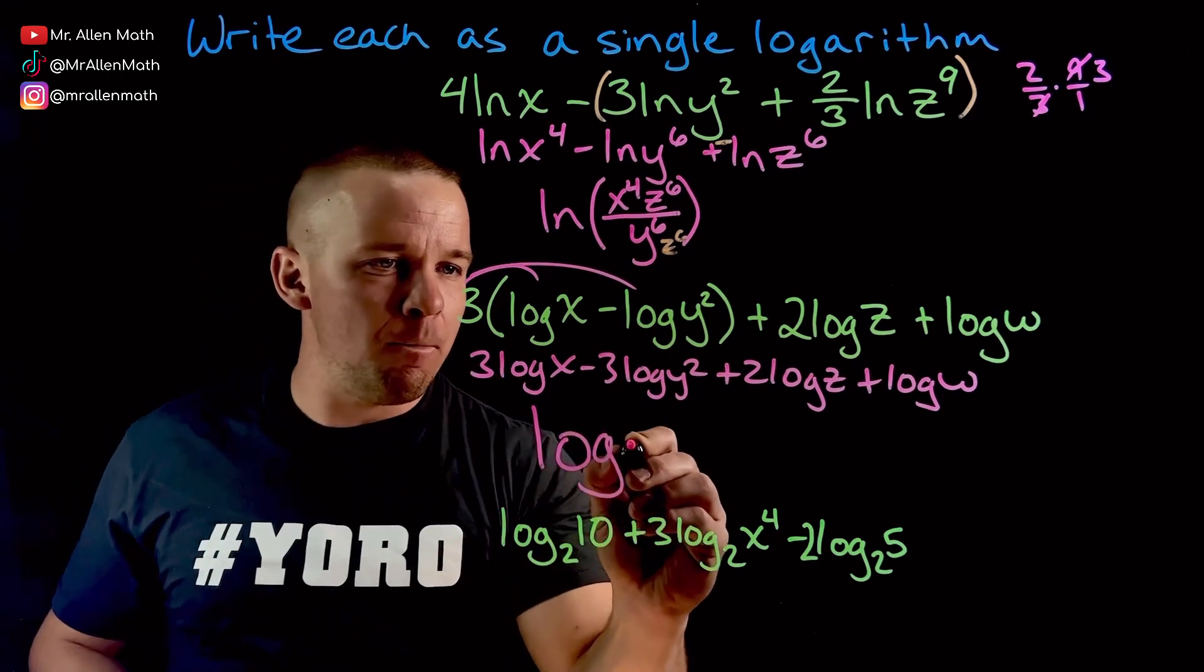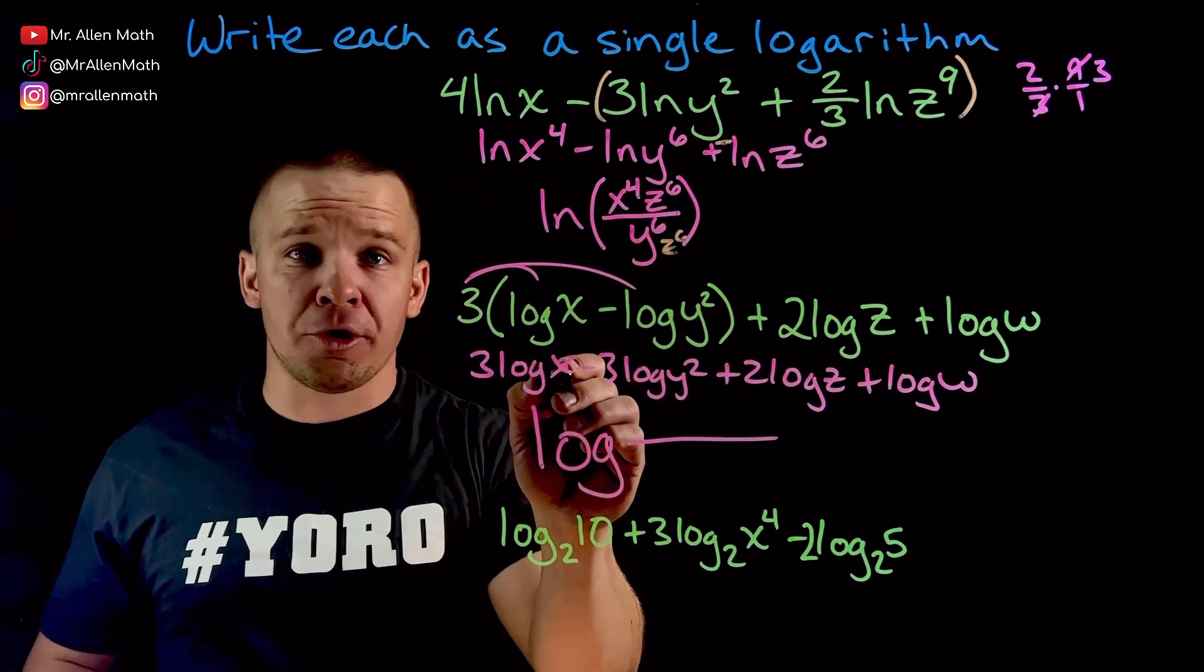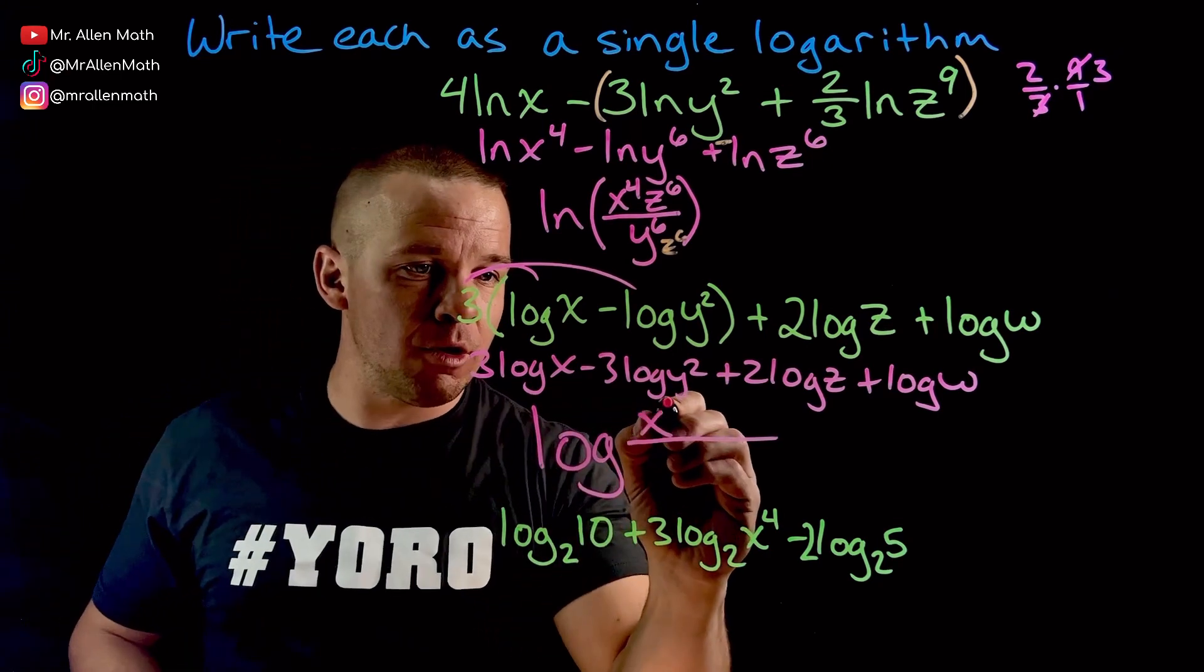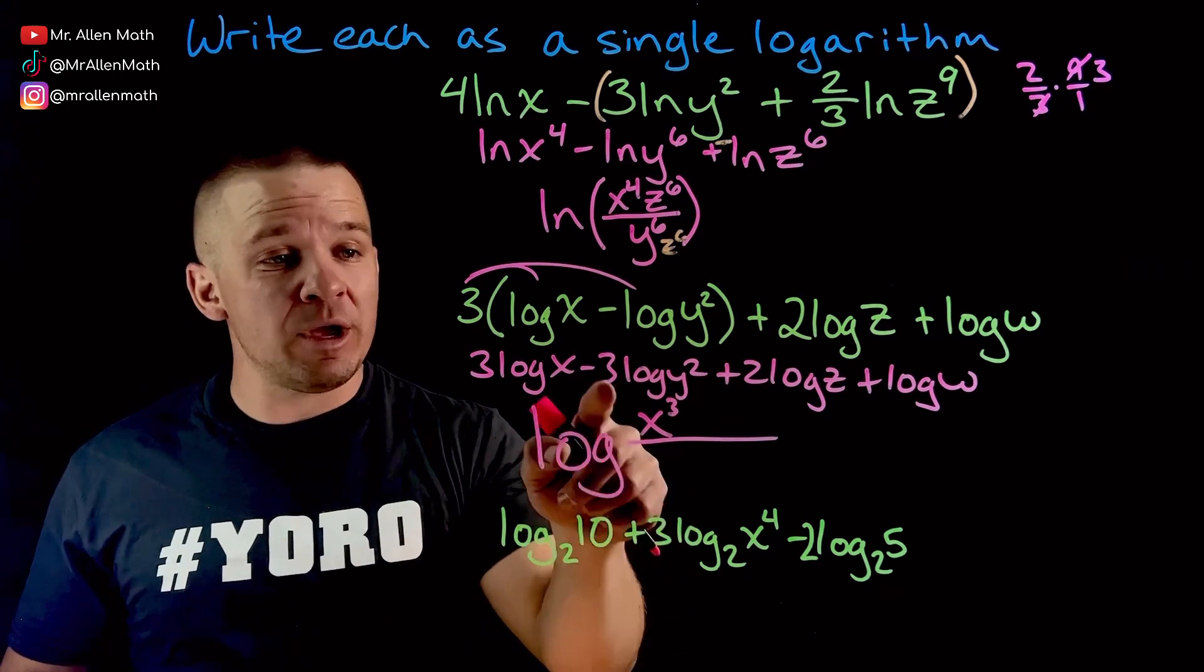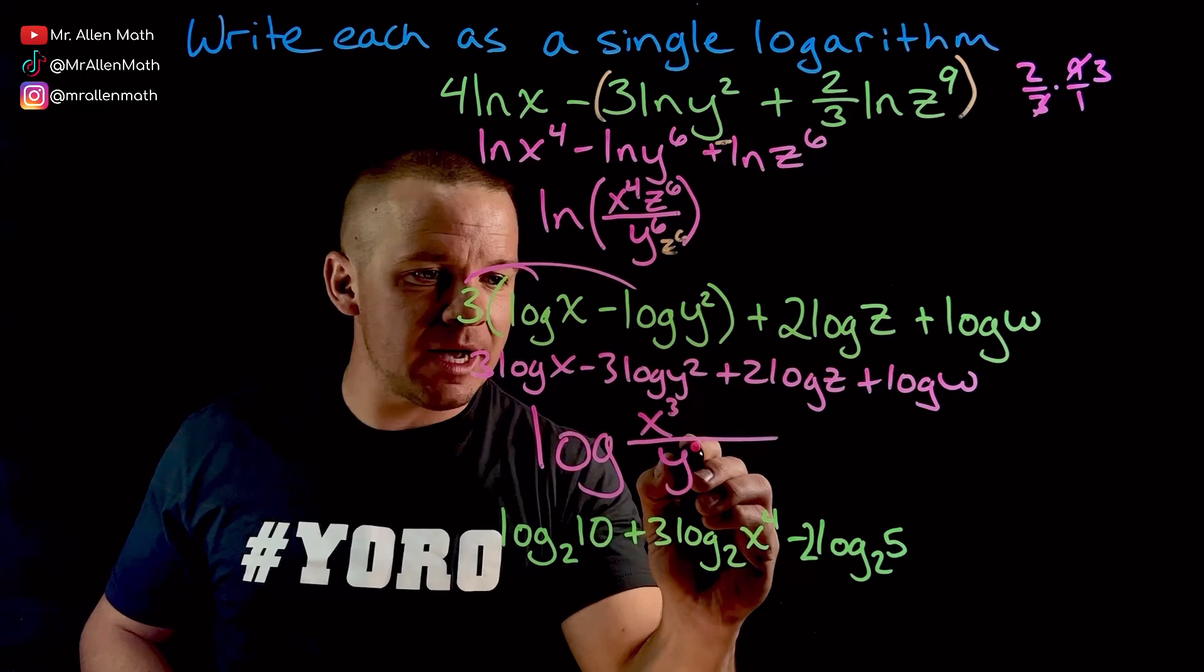Log, big old fraction. So we have, I know this is going to be x to the third. And since this is addition, this positive out in front, the x to the third will go up in my numerator. Now, the next one, it's a negative. So it's going to go down to the denominator. We got three. We got y squared. This is going to become y to the sixth. And that is in my denominator.